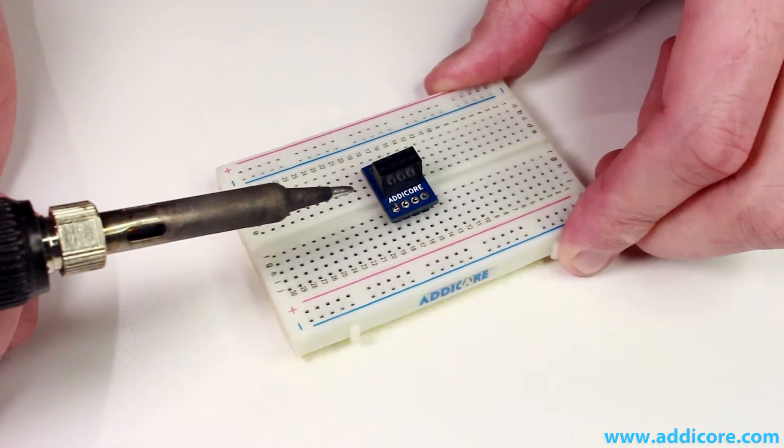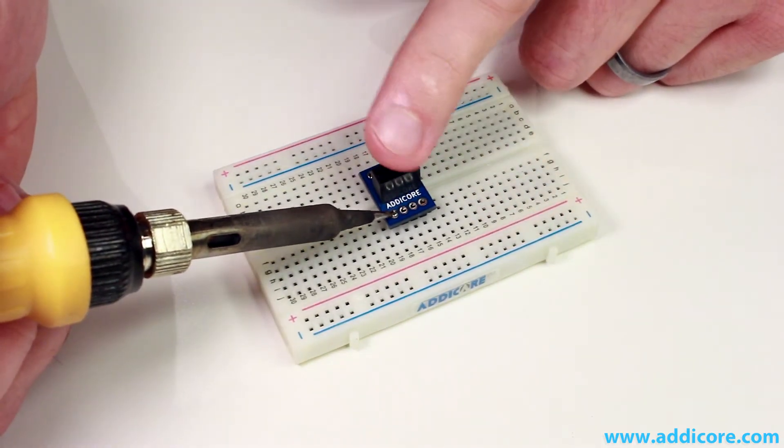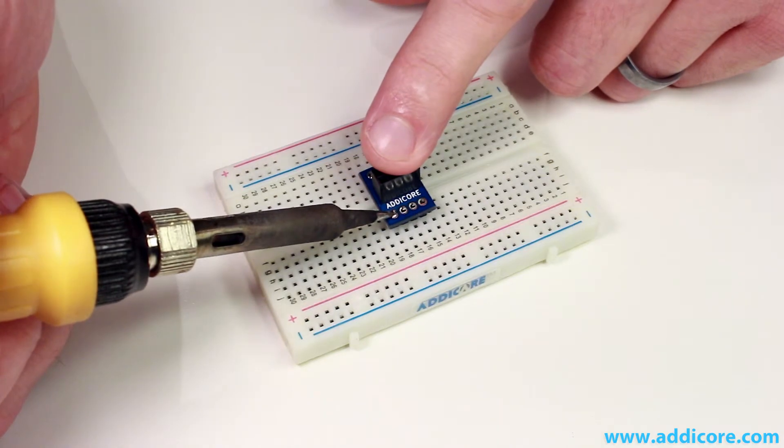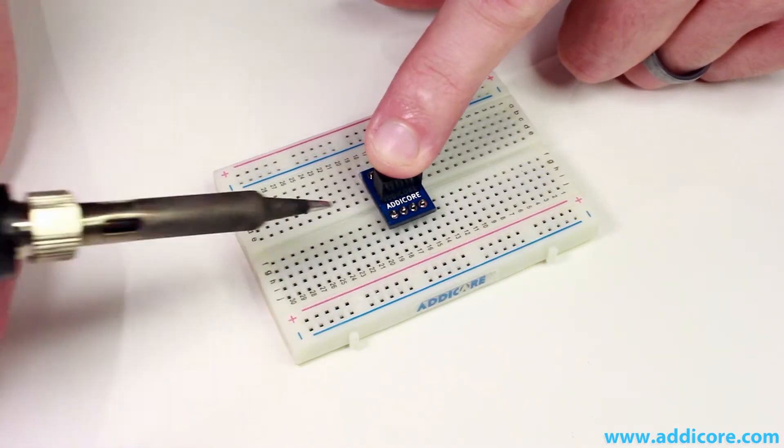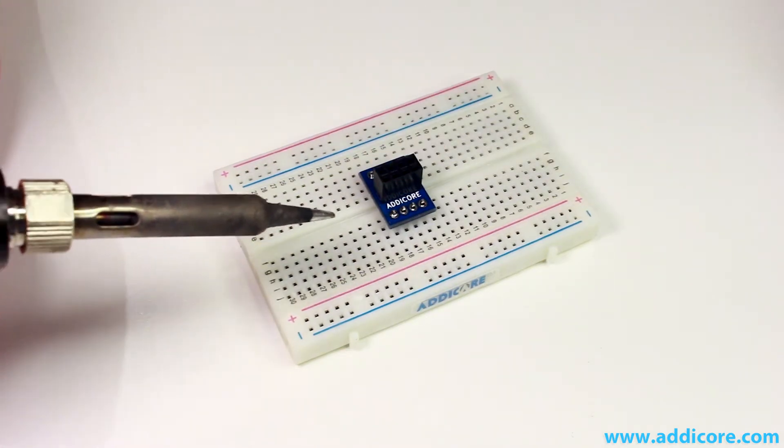Kind of hard to see here maybe, but as I reflow this joint, if I push on it, then everything will align up once that joint is reflowed. Then I can let that cool and everything should now be aligned.